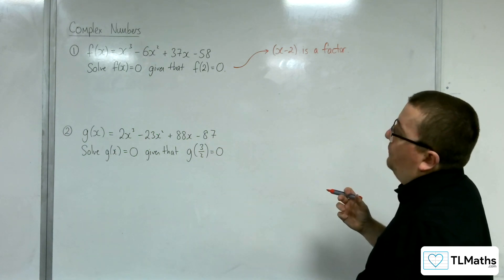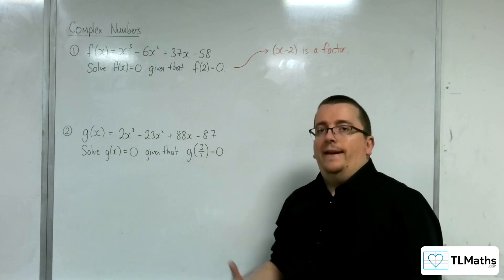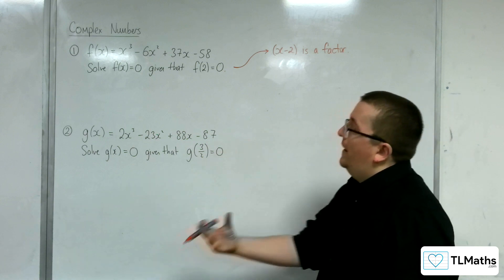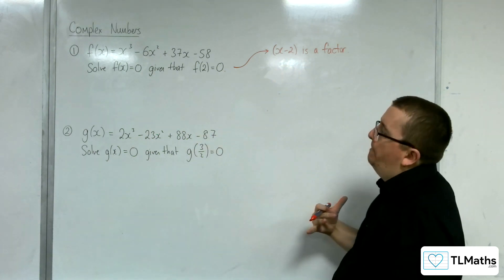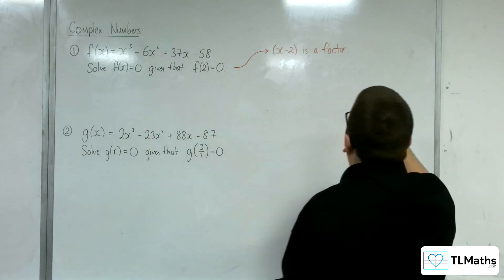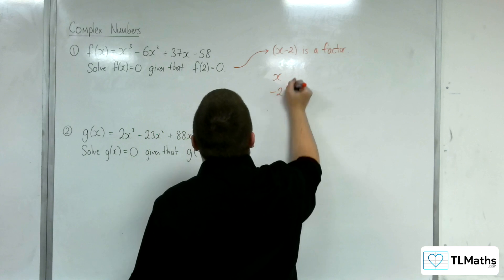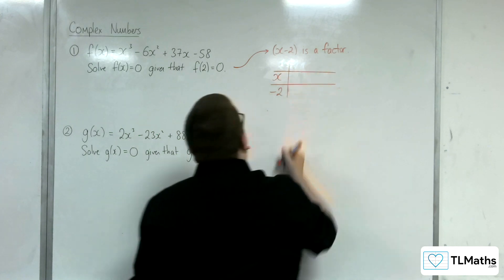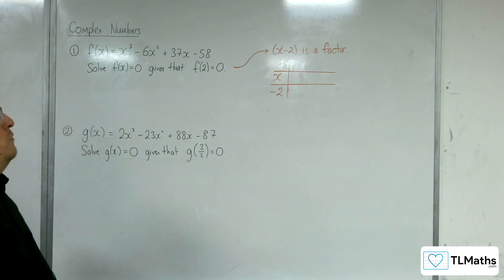So, (x - 2) is a factor, which means that we can use polynomial division or inspection in order to write f(x) as a product of a linear factor, (x - 2), and a quadratic factor. So I'm going to use polynomial division. Once again, you might not have met these skills yet. This is met in polynomials in A-level maths, rather than further maths.